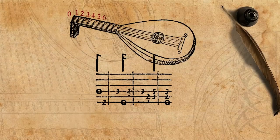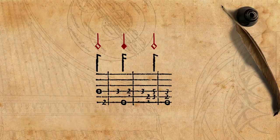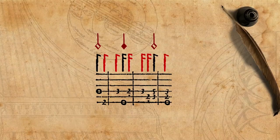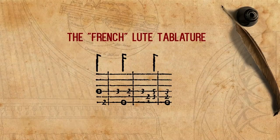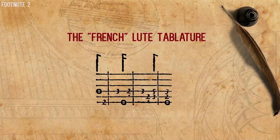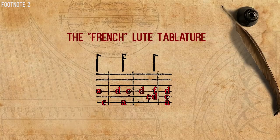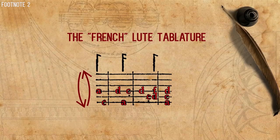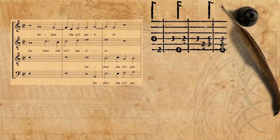The rhythm is indicated by signs above the tablature, each sign applying until it is replaced by another sign. The so-called French Lute Tablature is almost the same, only that the numbers are replaced by letters and the courses are arranged in reverse order. Back to Ancor che col partire.